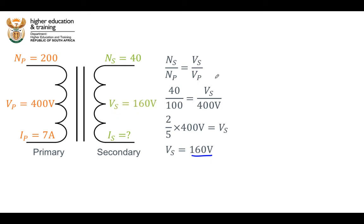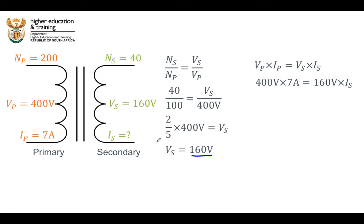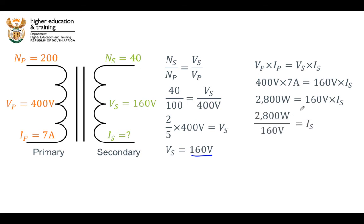Now we can use our power equation. The voltage across the primary coil multiplied by the current through the primary coil equals the voltage across the secondary coil multiplied by the current through the secondary coil. Filling in the known values: 400 volts multiplied by 7 amps equals 160 volts multiplied by the secondary current. That gives 2800 watts in the primary circuit, and assuming no power losses we divide both sides by 160 volts to find that the current through the secondary coil is equal to 17.5 amps.